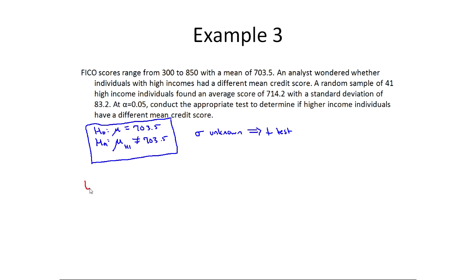As before, I calculate my t-test statistics. So t is going to be x-bar minus mu, so 714.2 minus 703.5 divided by 83.2 over the square root of 41. And so for this, when you round it, I get about 0.8. Now that I have my t-test statistic, I want to get my rejection region. There's my t-distribution, there's zero.